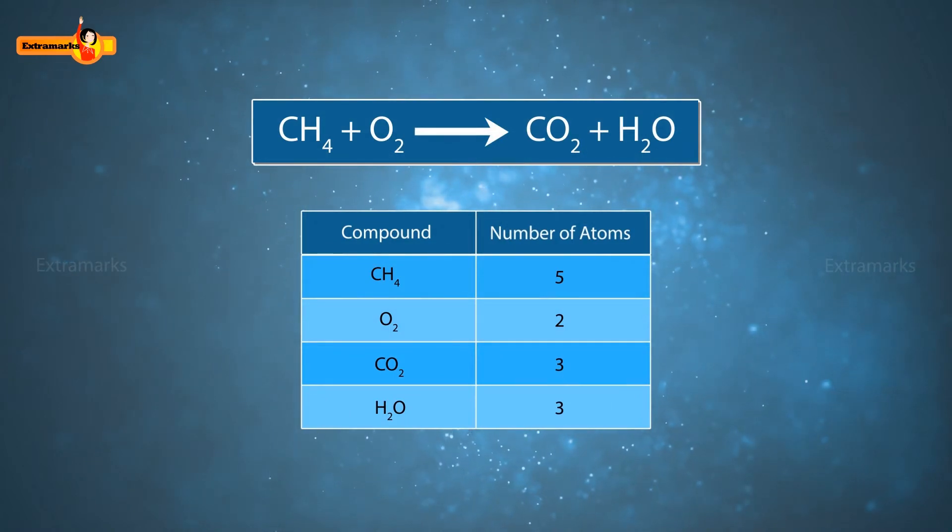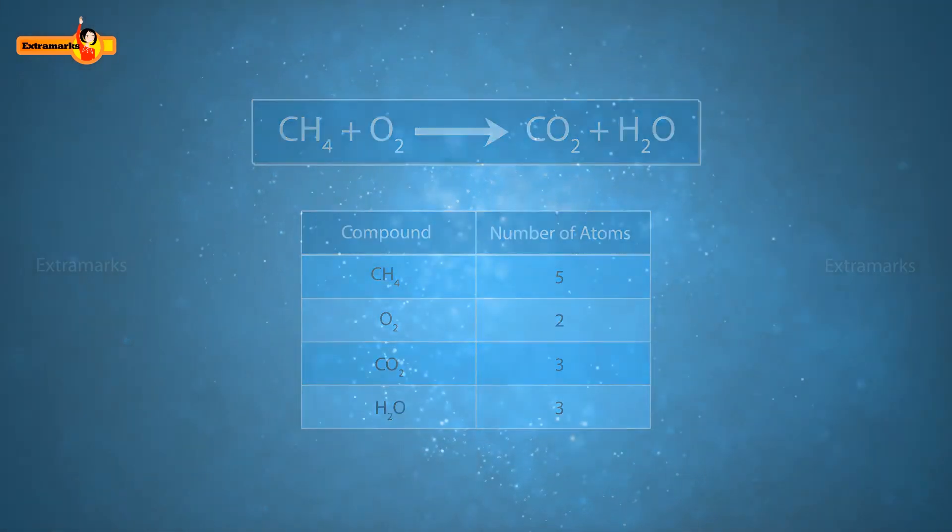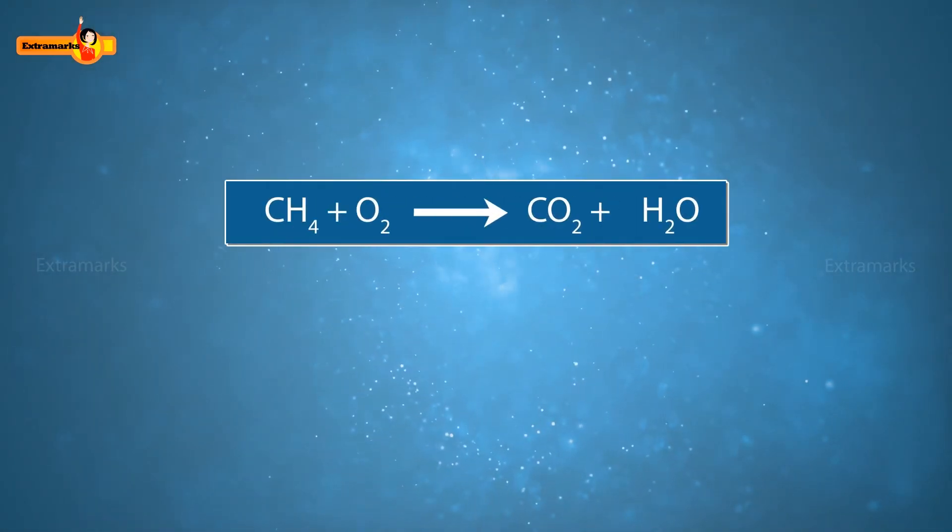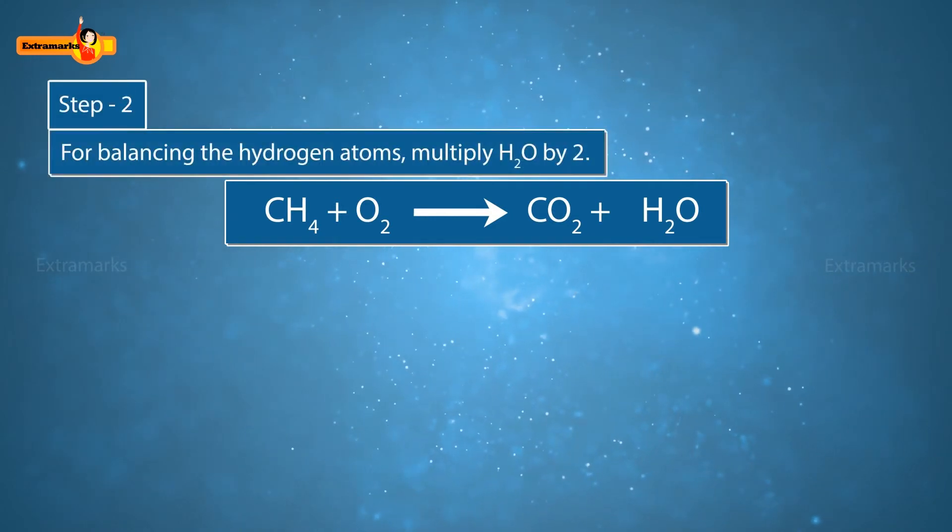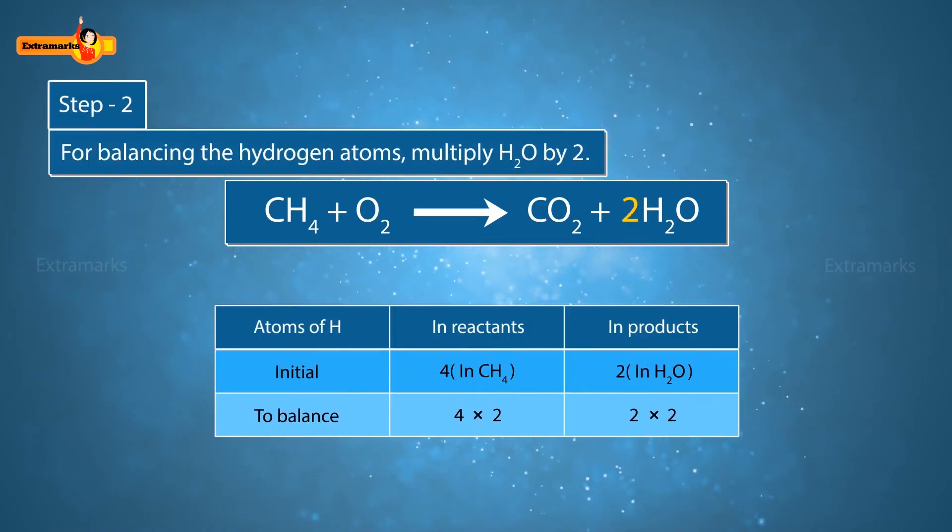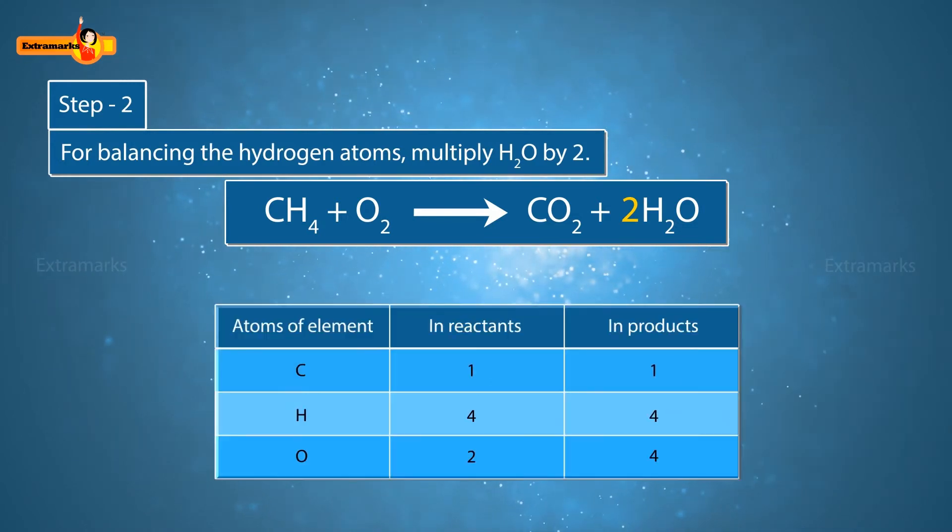Generally, balancing of a chemical equation starts from the compound that has more number of atoms. And in that compound, it is started with the element that has maximum number of atoms. So, we have to start with number of hydrogen in the methane molecule and for balancing the hydrogen atoms, multiply water by 2. That is, write 2 as a coefficient of water. Count the hydrogen atoms on both sides again.